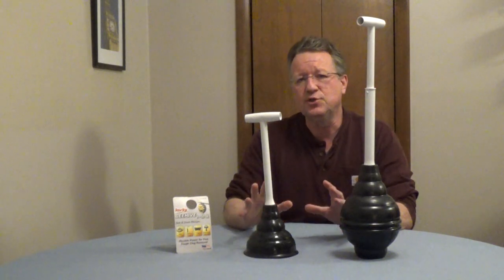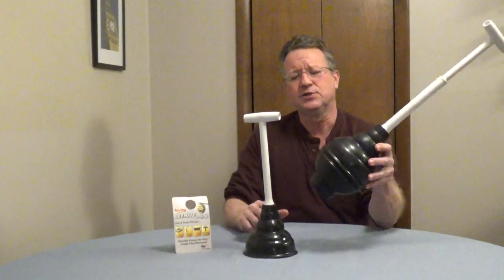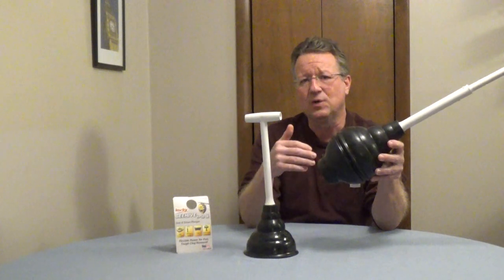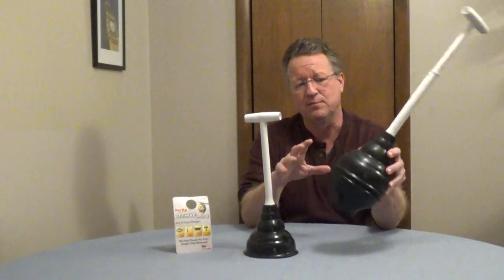If you're shopping for a plunger, there's two styles. A toilet plunger is going to have a flange and this will allow it to seat itself in the opening at the bottom of the bowl.